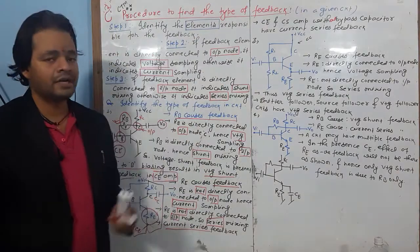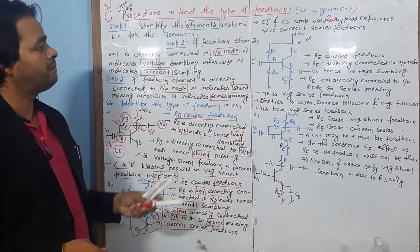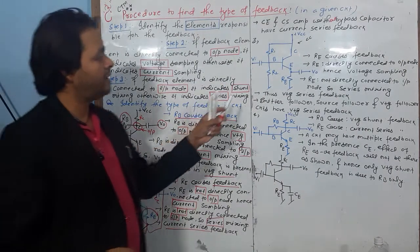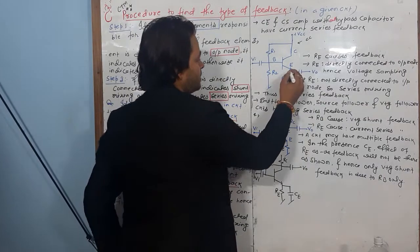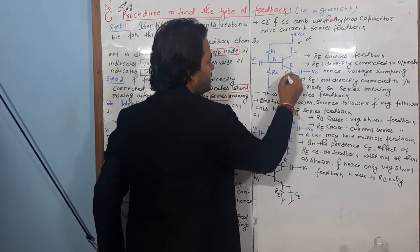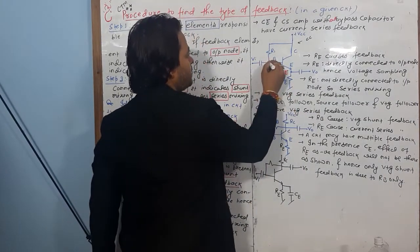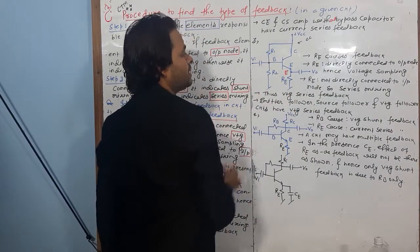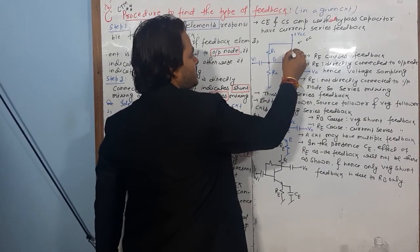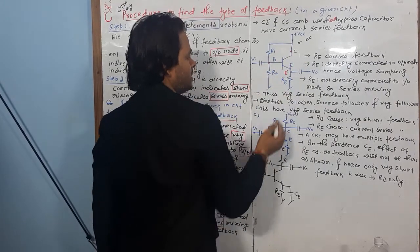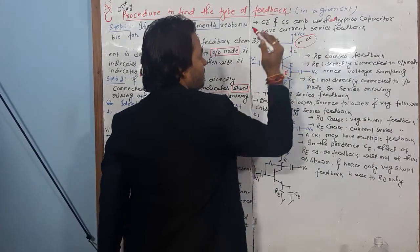Now the third problem. First, identify: the output is connected from the emitter E, the input is connected from the base B, and the collector C is common to both. Therefore, this is a common collector amplifier.